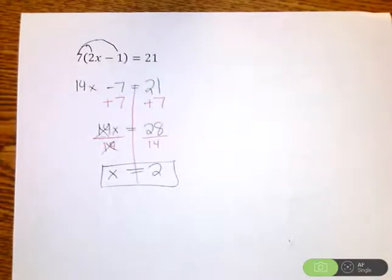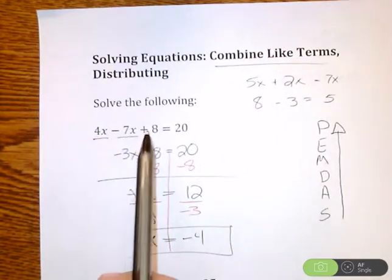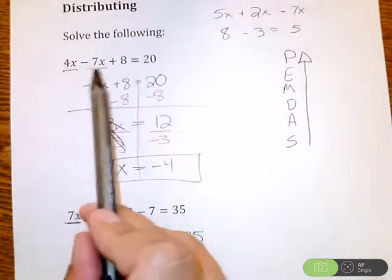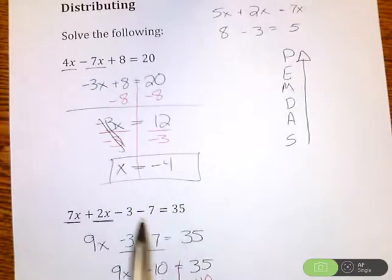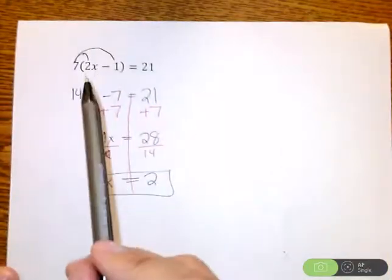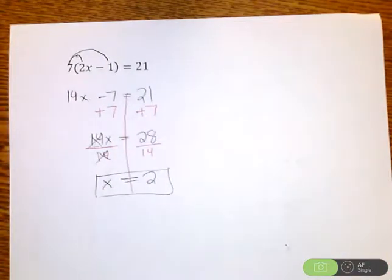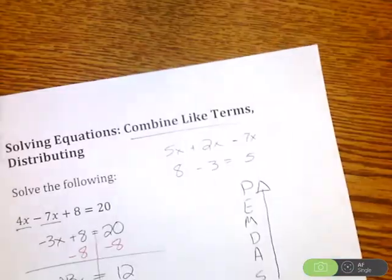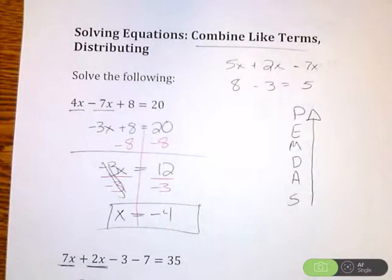Moral of the story here is before you draw on that line to start solving, always look and see if you could combine like terms, whether that be the x's, your variables, or your integers, like negative 3 and negative 7. If you see parentheses, I would go ahead and distribute there, and then solve from there after combining like terms. So that was solving equations, dealing with combining like terms and distributing.